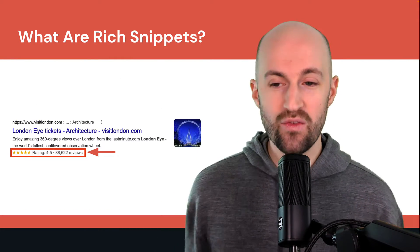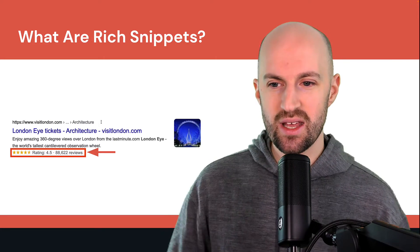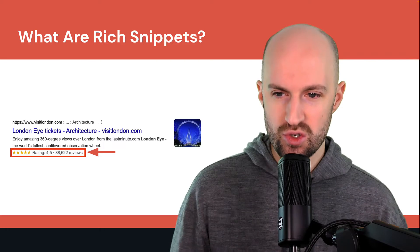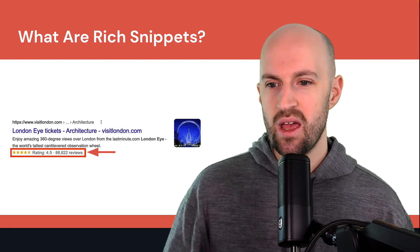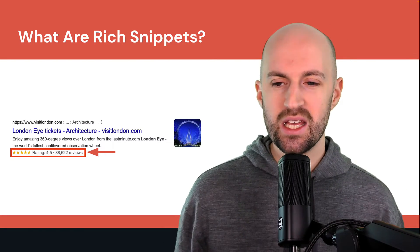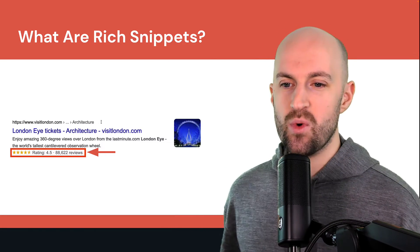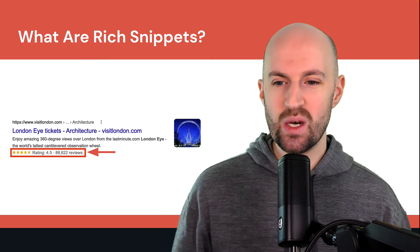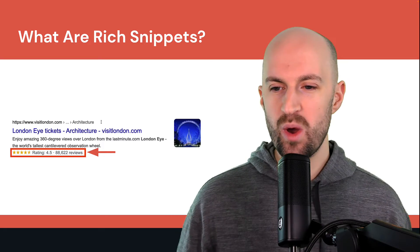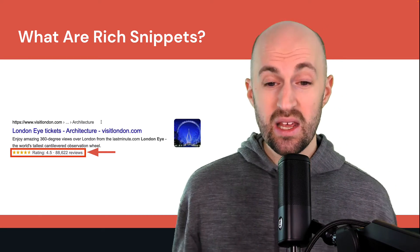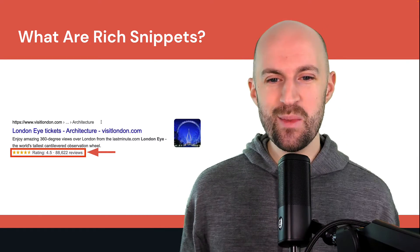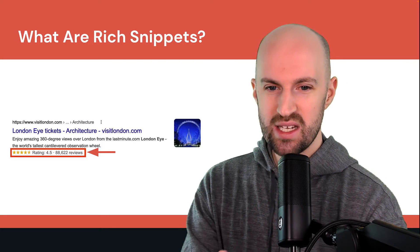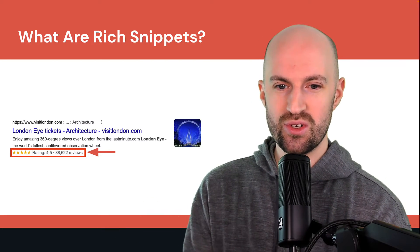Another example that you've seen a lot are ratings. Once ratings are tagged up correctly, they can show up in search results like this. In this case, London Eye tickets or attractions in London — you'll see it has 88,000 reviews with a 4.5 average rating. It even pulls in an image for that, which is fantastic, and it just creates more impact when people are searching for it.